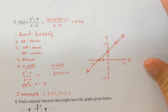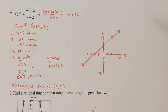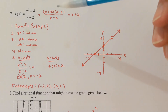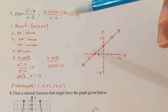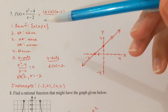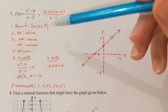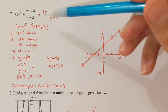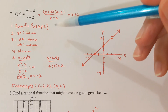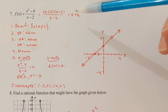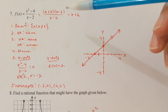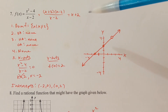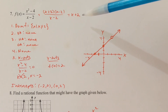Problem 7: f of x equals x squared minus 4 divided by x minus 2. The domain is all x such that x is not equal to 2. When I factor the numerator, x minus 2 cancels out, leaving x plus 2.